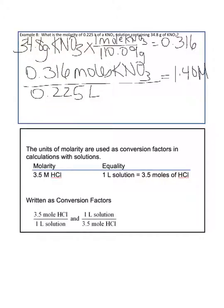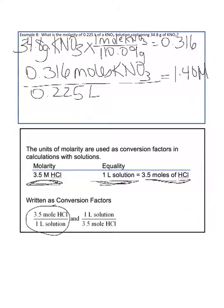These units of molarity can also be used as conversion factors, just like percent by mass or percent by volume. Molarity tells you that for a 3.5 molar hydrochloric acid solution, for every 1 liter you have 3.5 moles of HCl. Written as a conversion factor, that is 3.5 moles of HCl per 1 liter, or 1 liter per 3.5 moles. This will become important later on.